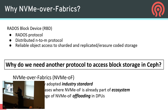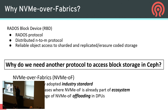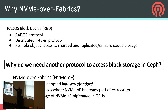Why NVMe over Fabric? NVMe drives are high-performant, parallel, durable, and scale across the network. We have RBD underscoring the implementation of NVMe over Fabric. RBD is already rock-solid, used, tested, performant. We have mapped almost all of the direct functions for NVMe over TCP to RBD-native calls. Distributed end-to-end, no rigidity in the structure, reliable object access to sharded erasure coding. Industry standard — Samsung, Intel, and other major players are developing on the development kits. Also, to take advantage of NVMe offloading and DPUs.